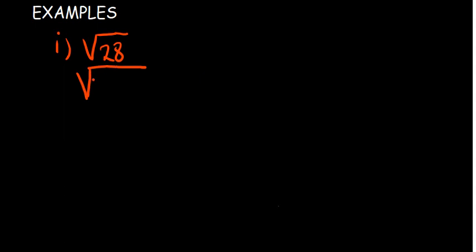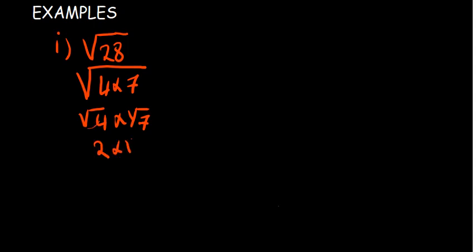So the square root of 28 equals the square root of 4 multiplied by the square root of 7, which gives us 2 multiplied by the square root of 7. That is your simplified answer — 2√7. You didn't need a calculator; you just had to find the right factors of 28 to avoid those never-ending decimal places.